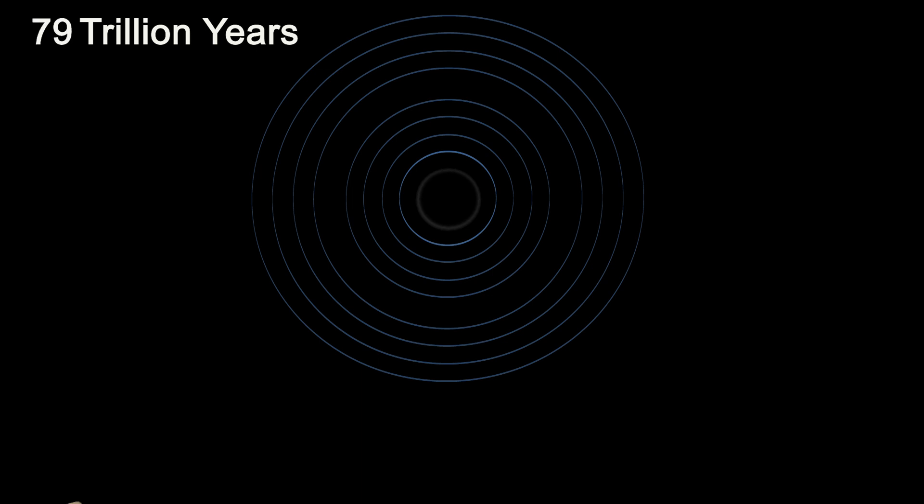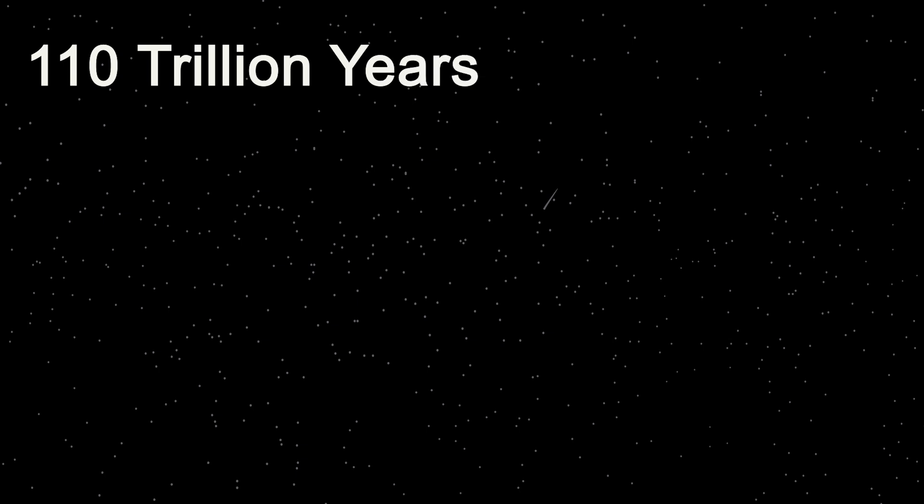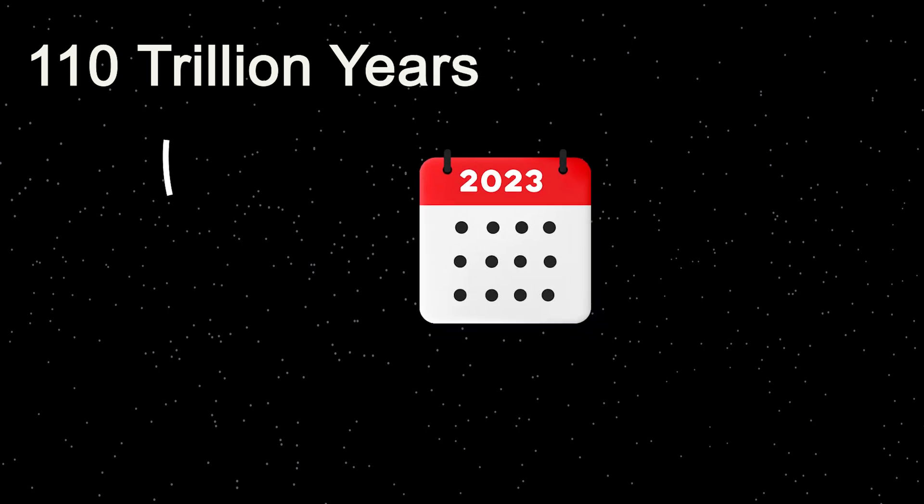And finally, in 110 trillion years, the sun, which is now a black dwarf, cools and dims, eventually fading away, marking the end of the solar system as we know it. But on the positive side, if 110 trillion years represents a whole year, humans have only existed for less than a tenth of a second. So I guess you can say we still have some time.